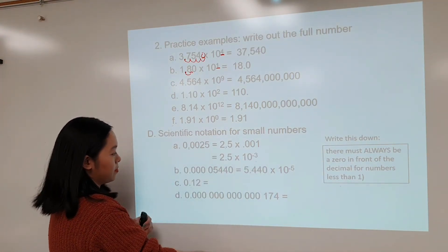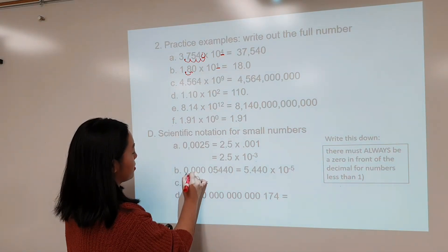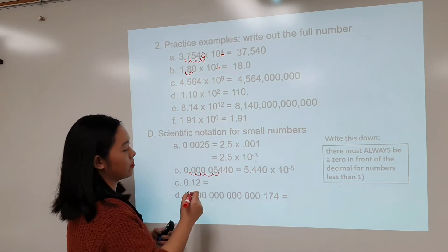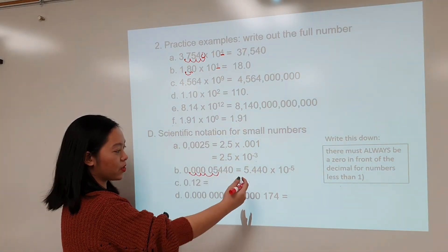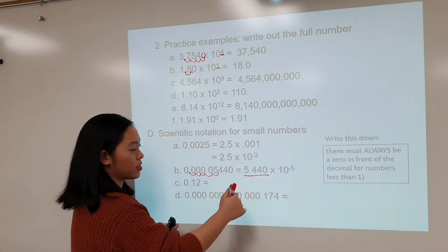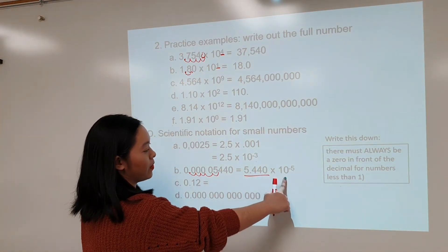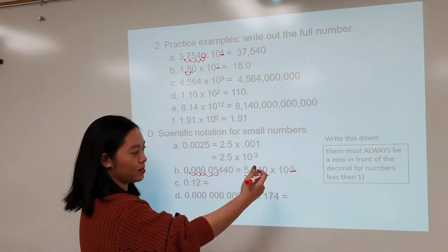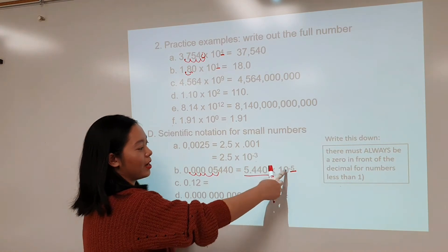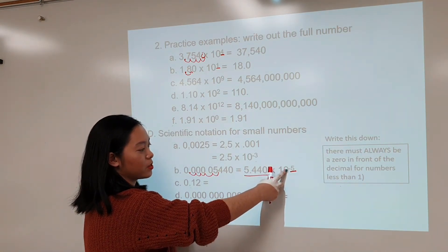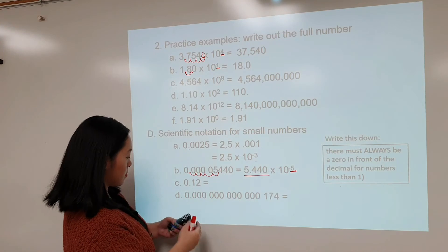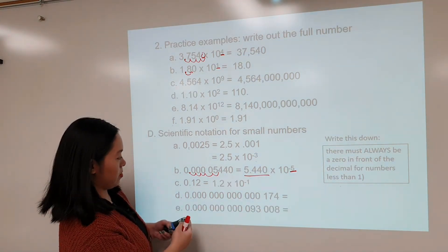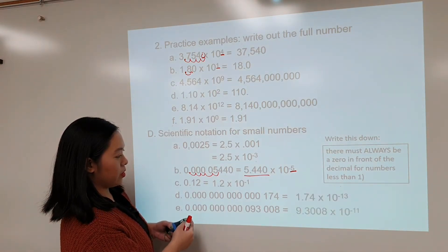Next example — here's the decimal point. Moving it 5 places over gives a number definitely between 1 and 10, and the answer is times 10 to the negative 5. We moved 5 places, but because it's a small number, it's negative 5 instead of positive 5. We do the same thing for C, D, and E, giving you these answers.